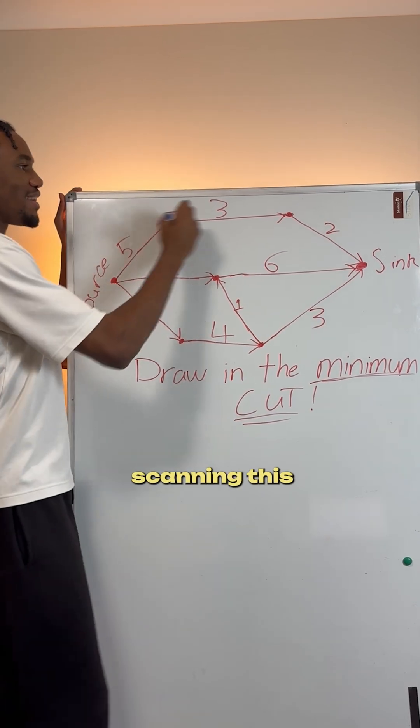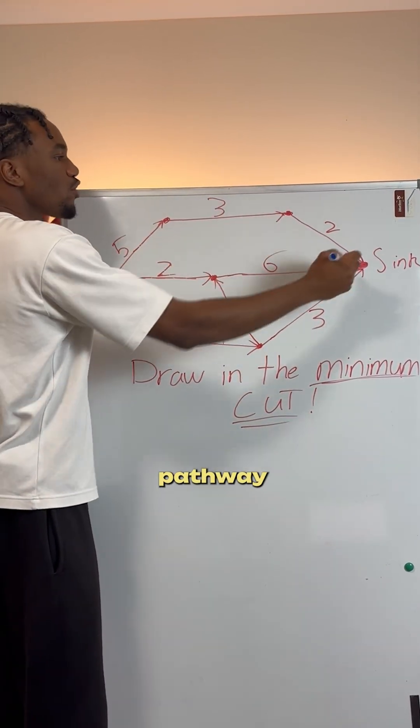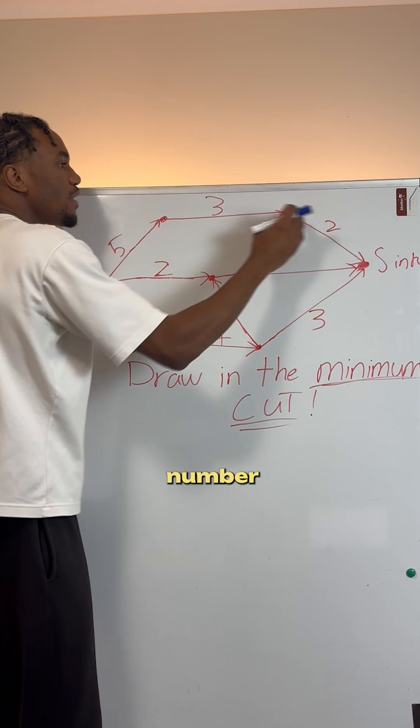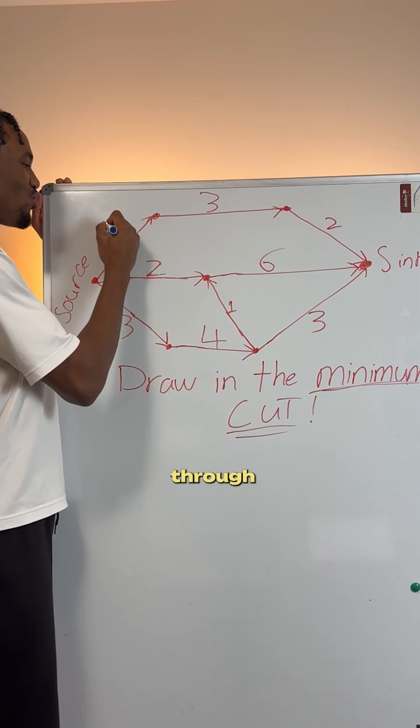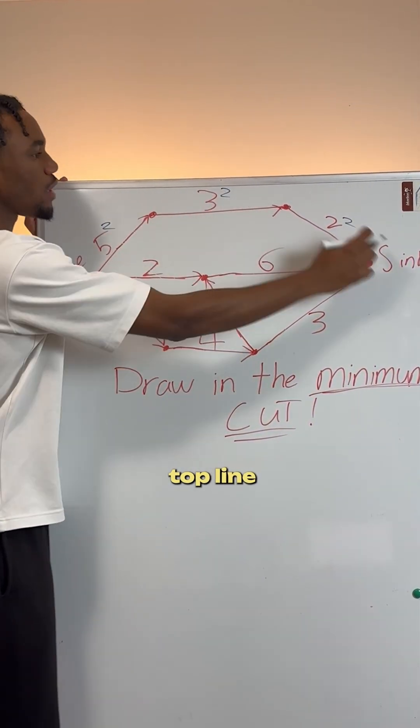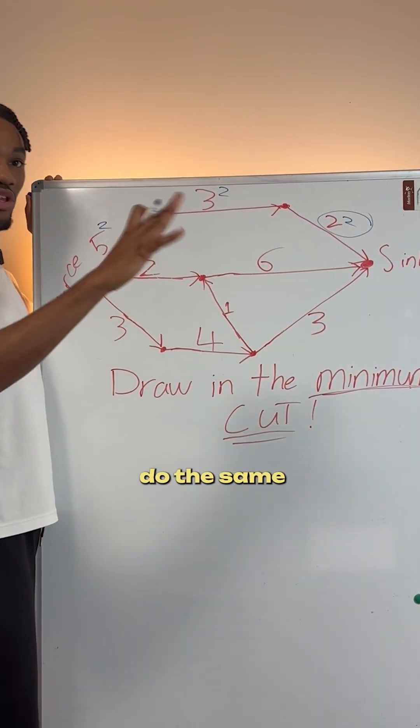If we're scanning this network here or this pathway, the lowest number that can flow through this pathway is two. So we're going to put a max of two through this whole top line. And we'll circle this because it's full.